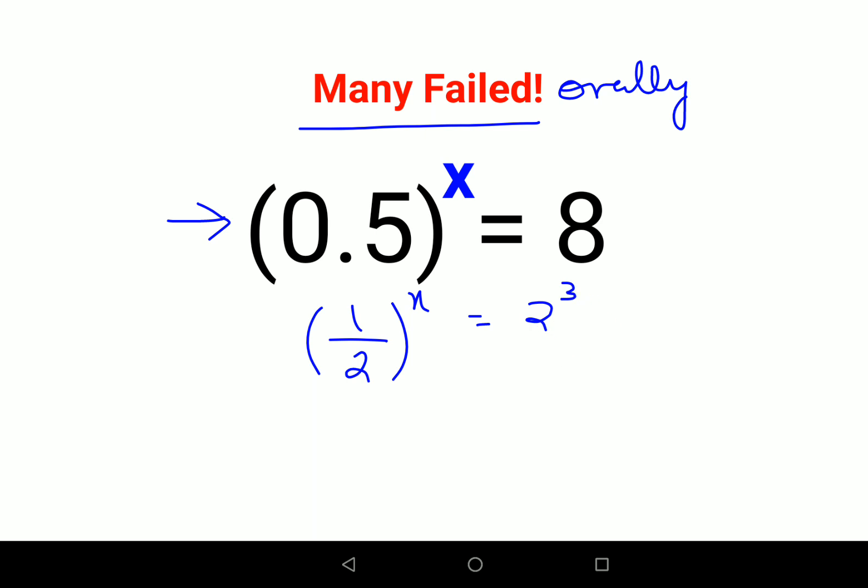This 1 raised to 1 upon 2, the whole raised to x, can be written as 1 raised to x upon 2 raised to x equals 2 cube. Now, 1 raised to anything will always remain 1 upon 2 raised to x equals 2 cube.